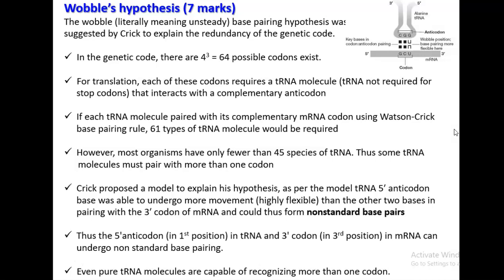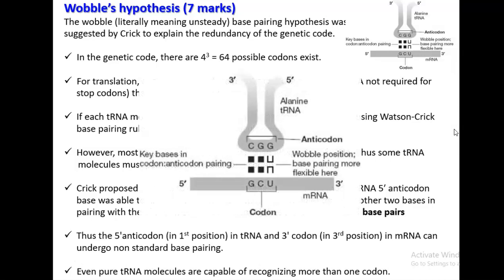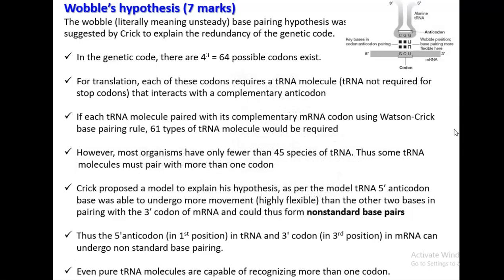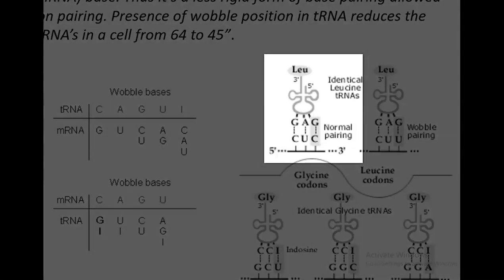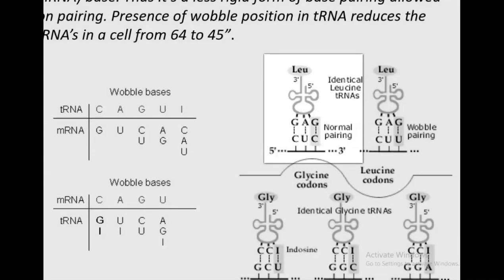Crick proposed a model to explain his hypothesis. As per this model, the tRNA's 5' anticodon base was able to undergo more movement — highly flexible or wobbling — than the other two bases in pairing with the 3' codon of the mRNA. This could result in the formation of a non-standard base pairing. Looking at the diagram, you can understand the non-standard base pairing. A leucine tRNA is identifying the right codon first, referred to as normal base pairing. The non-standard base pairing is shown on the right-hand side.